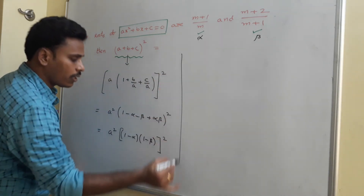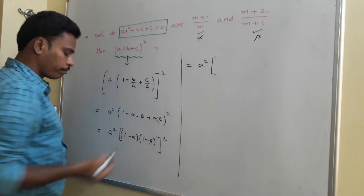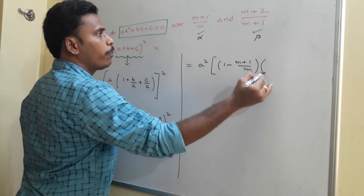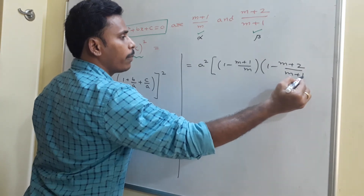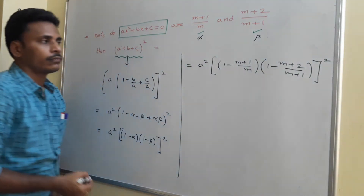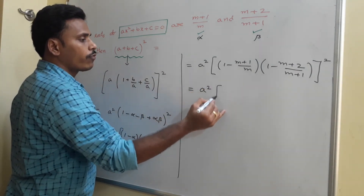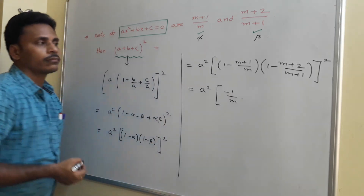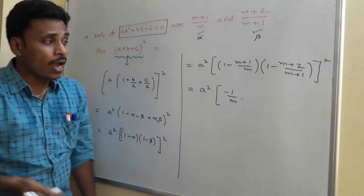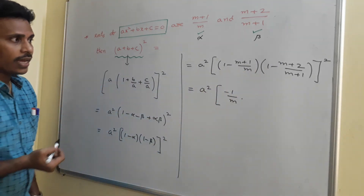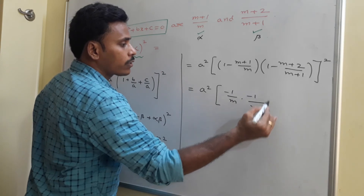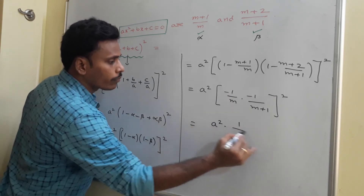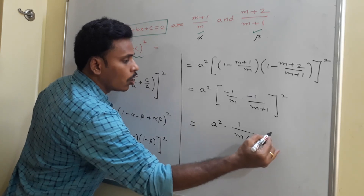Now substitute the actual values: 1 minus alpha = 1 minus (m+1)/m = minus 1/m, and 1 minus beta = 1 minus (m+2)/(m+1) = minus 1/(m+1). So we have a² times (minus 1/m)(minus 1/(m+1)) whole squared = a² times [1/(m(m+1))]².